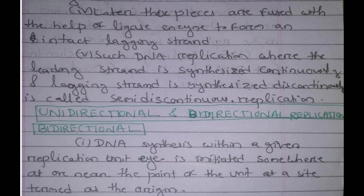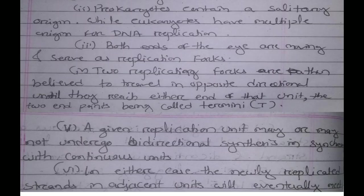In bidirectional replication, the first point is that DNA synthesis within a given replicon is initiated at a specific site termed the origin. Prokaryotes contain a solitary origin, while eukaryotes contain multiple origins for DNA replication.